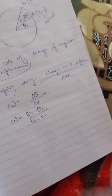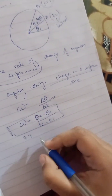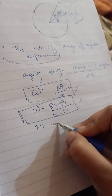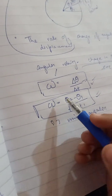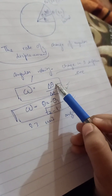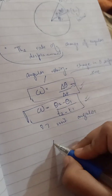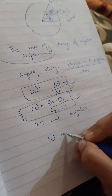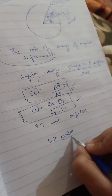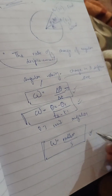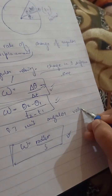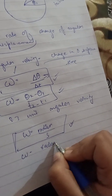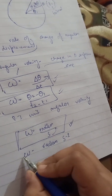If you want the SI unit of angular velocity: the unit of angular displacement from the previous video was radian, and the unit of time is second. So the SI unit of angular velocity is radian per second. We can also write this as radian second to the power of negative one, which is radian s⁻¹.